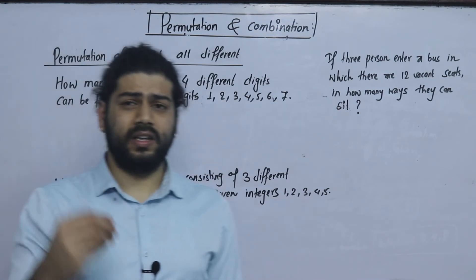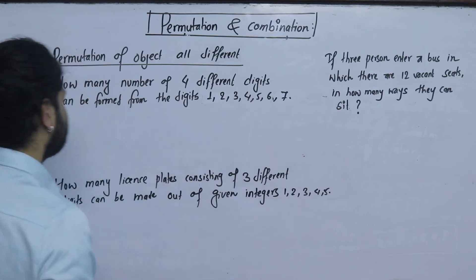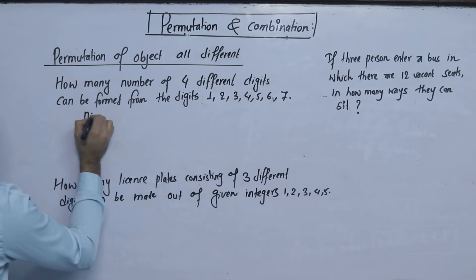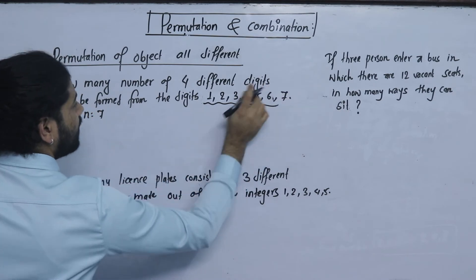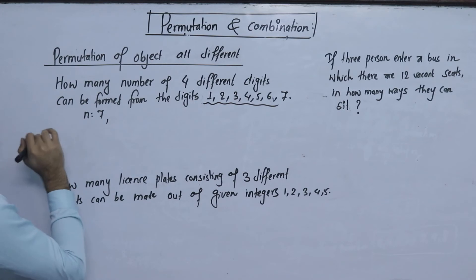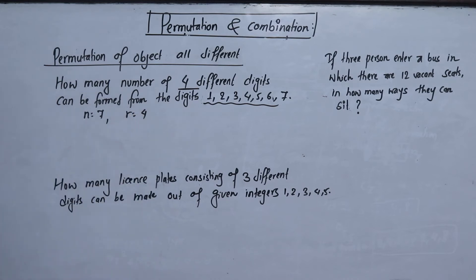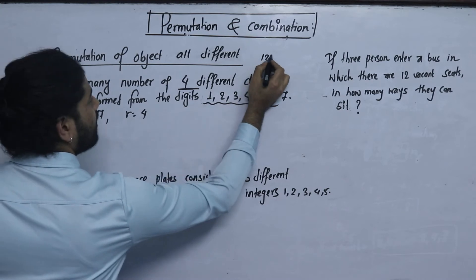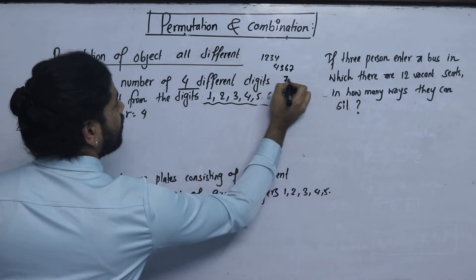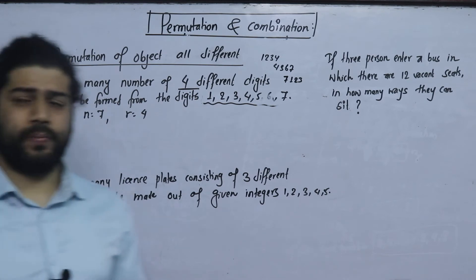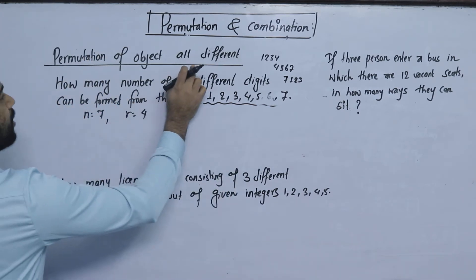We always have a permutation of objects with different options. This one is a case of 7 options. When we have 7 objects and choose 2 — or here we have 4 different digits — for example: 1234, 4367, 4360, 7123. These are all 4-digit numbers. Permutation of objects, all different.